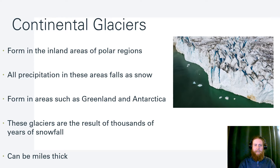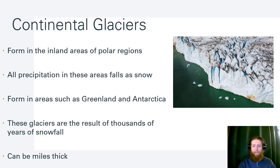Continental glaciers form inland, especially in the inland areas of polar regions. All precipitation in these areas falls as snow — no rain, just snow year-round. Areas such as Greenland and Antarctica get these. They can be the result of thousands of years of snowfall and can be miles thick, extending down to the continent itself.